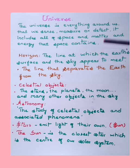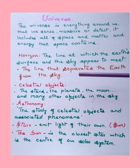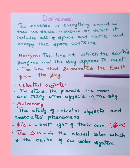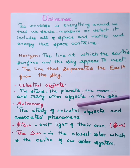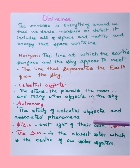The horizon is the line that separates the earth from the sky. About celestial objects — those objects like the stars, the planets, the moon, asteroids, comets, nebulae — all these come under celestial objects. The study of celestial objects and associated phenomena is called astronomy. Stars have their own light — they emit their own light.